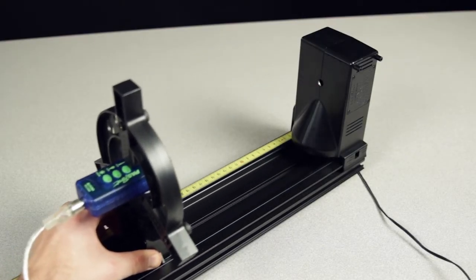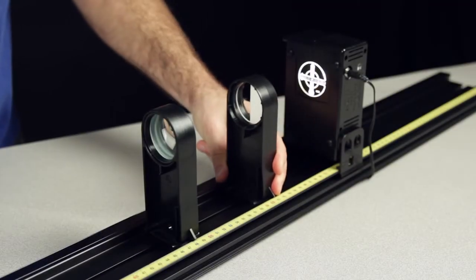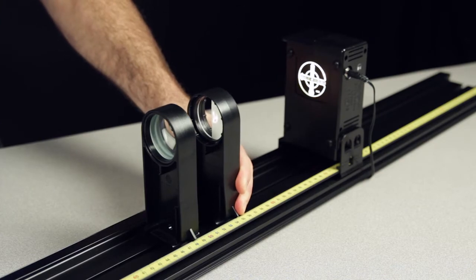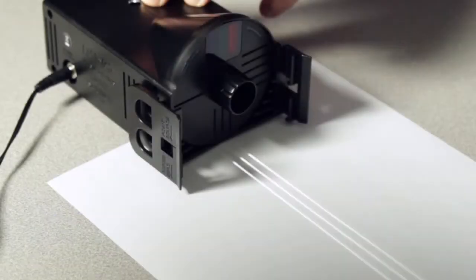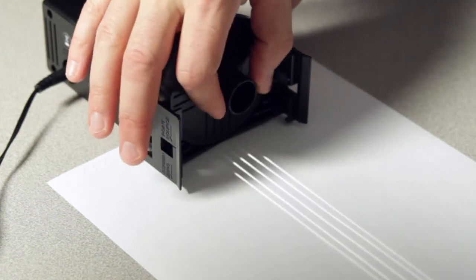The light source can function as a point source, an illuminated crossed arrow object, a primary color source, or a ray box with up to five parallel rays.